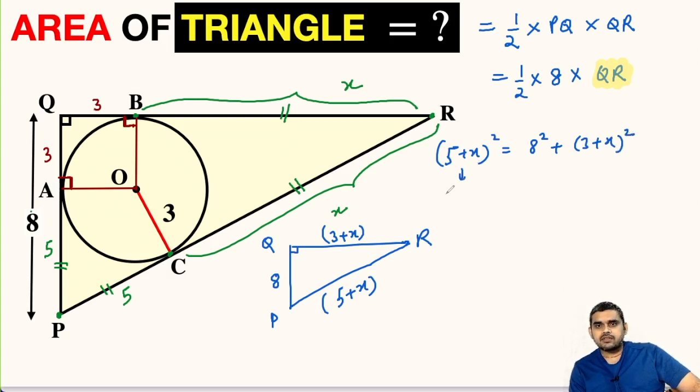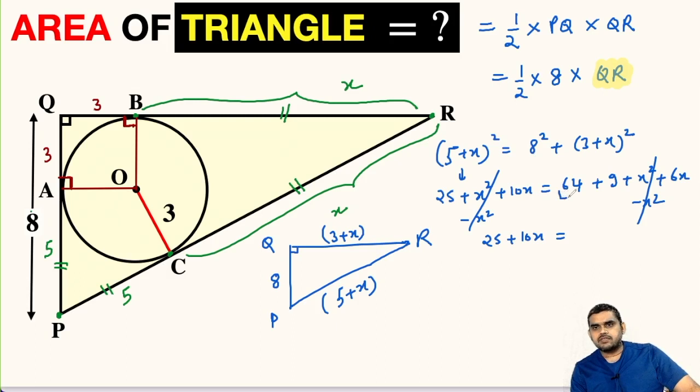Let us expand this bracket. So this will be 25 + x² + 10x equals 64 + 9 + x² + 6x. Now we can subtract x² from both sides. So this and this will get eliminated. This will be 25 + 10x equals 64 + 9, this will be 73 + 6x.